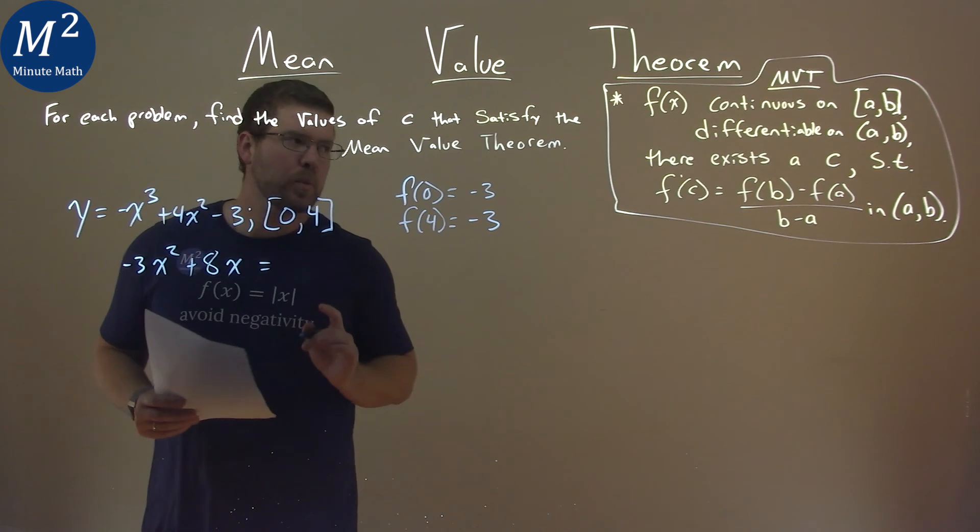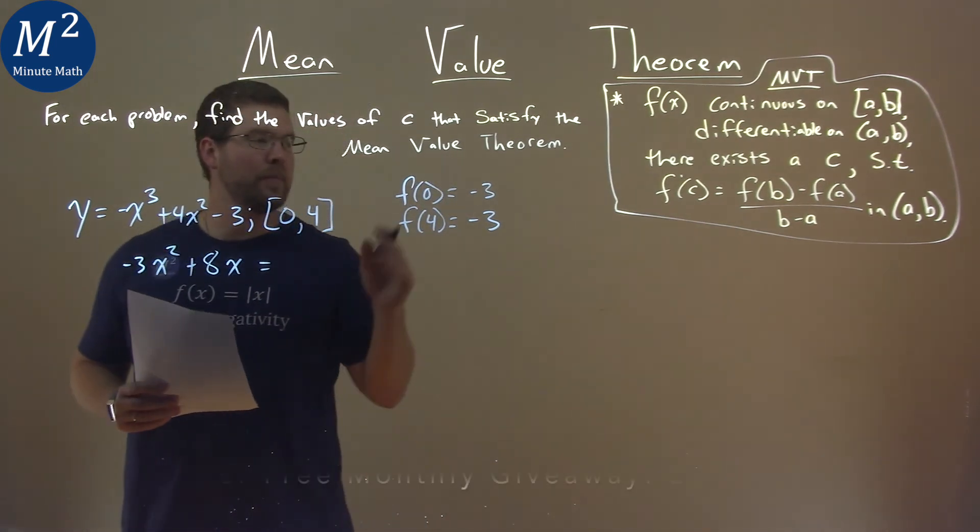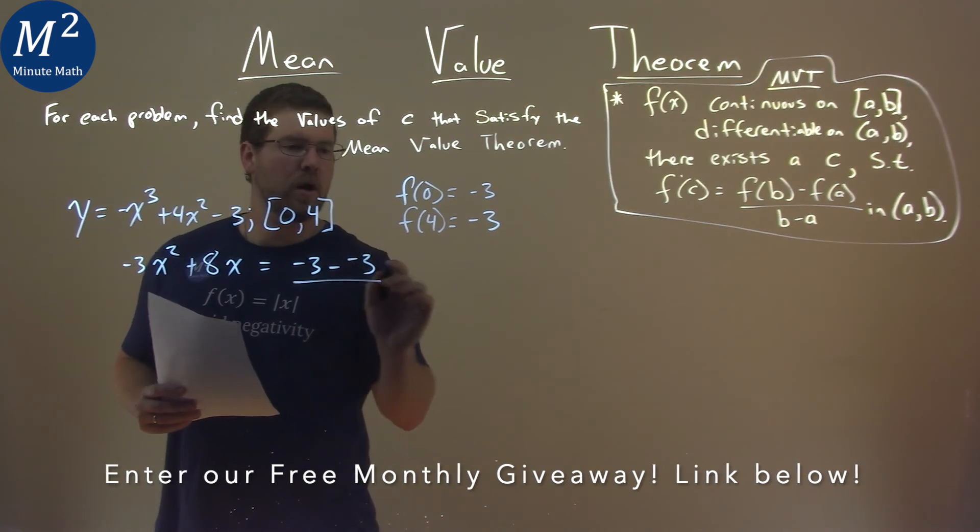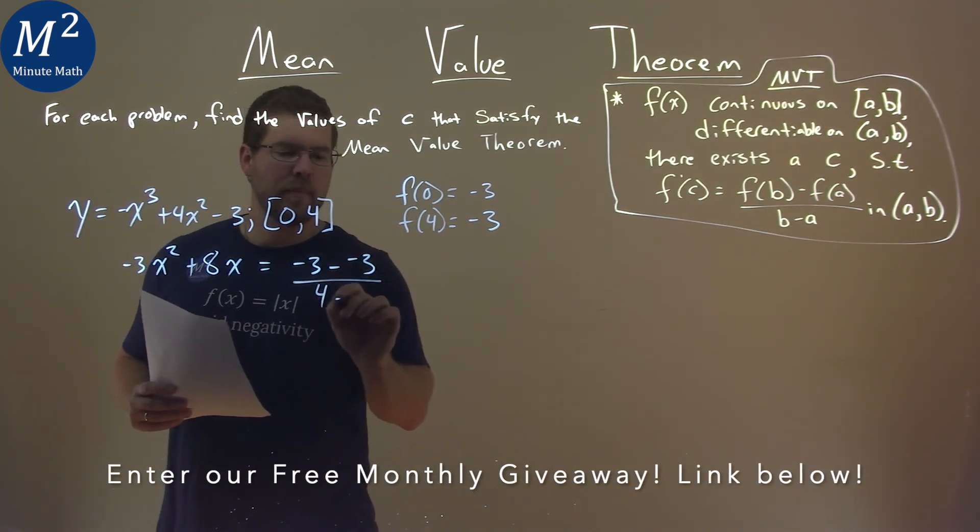We set that equal to, using our formula, f(b) - f(a) over b - a. We have -3 - (-3) over 4 - 0.